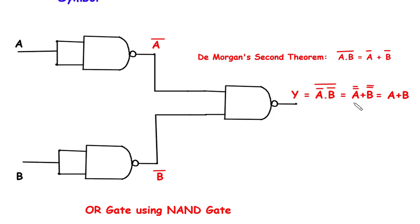Here, a bar will become a double bar because of the bar. So a double bar plus b double bar. The double bars will get cancelled.